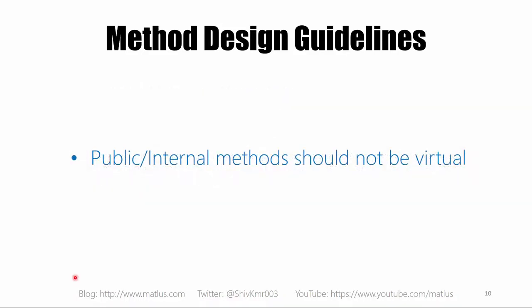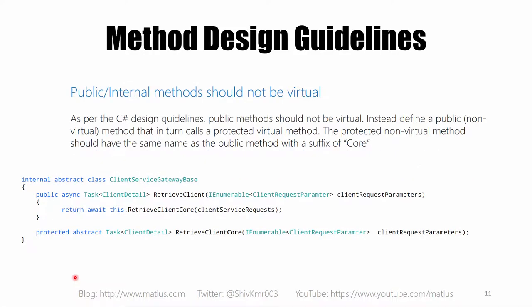Public and internal methods should not be virtual. This is a C# design guideline: if you have a need to make a method virtual or abstract and that method also happens to be public, don't make the public method virtual. Instead, have a method by the same name with a suffix of 'Core' and forward the call on to that method — the Core method can be protected. There is a security risk to making public methods virtual, so that's the reason the guideline exists.